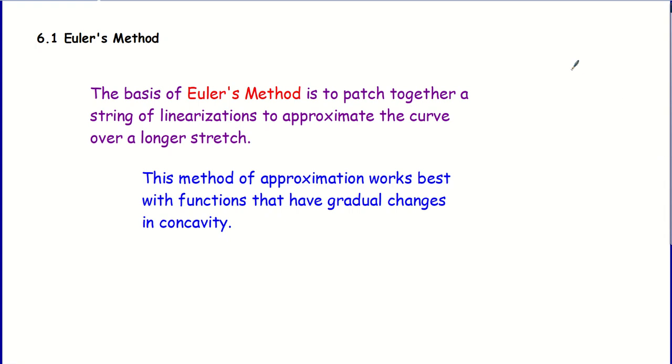We're looking at Euler's method, which happens to be section 6.1 in the Damana-Weitz AP Calculus book. First thing to note is the pronunciation. His name is pronounced Euler. Please pronounce it correctly.